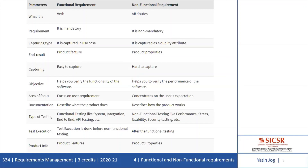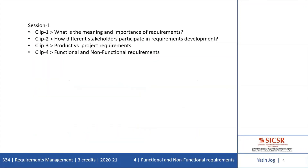Whenever you deal with any project or product, you will always have a list of functional requirements and a separate list of non-functional requirements. Combining both of these, you can create a final requirements document. This is all about functional and non-functional requirements — that is the end of clip number 4.